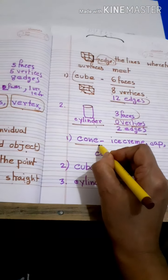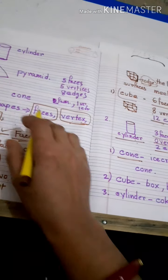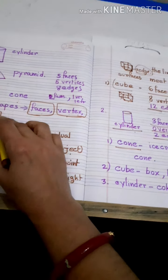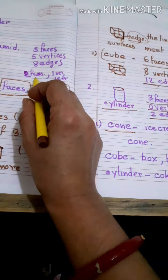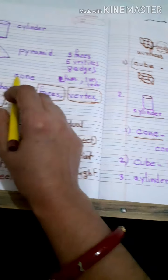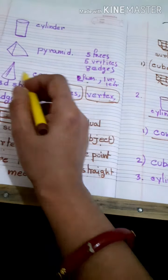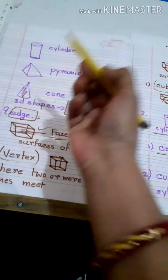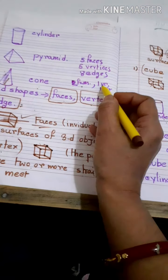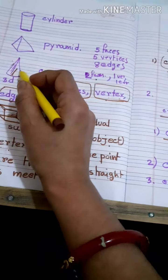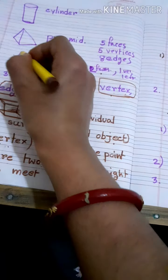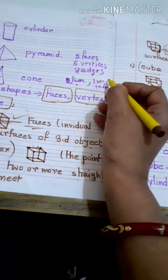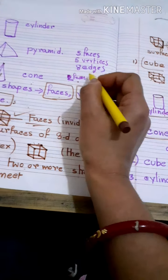Next, cone. See, this is the cone. A cone also has two faces — one here, one on the back side. One vertex — one point — and one edge.